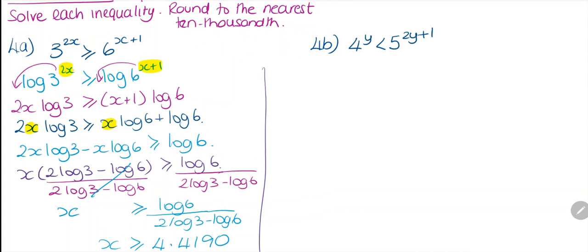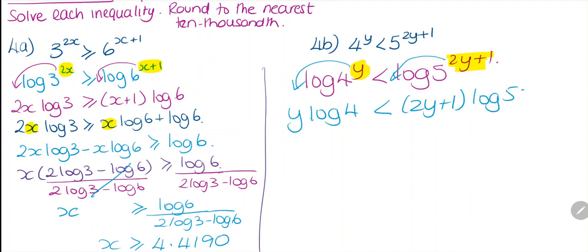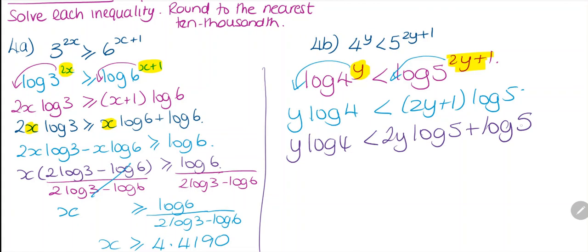We take the log of both sides: log 4^y and log 5^(2y+1). We rewrite the exponents in front of the logs, so y log 4 is less than (2y plus 1) log 5. Multiplying out the right-hand side: y log 4 is less than 2y log 5 plus log 5.